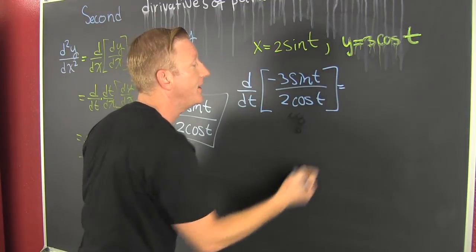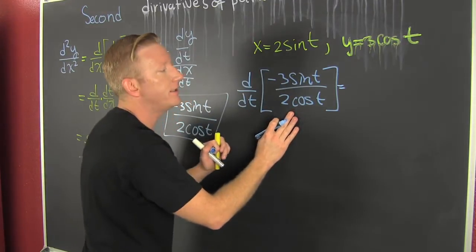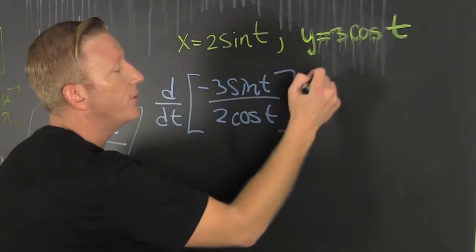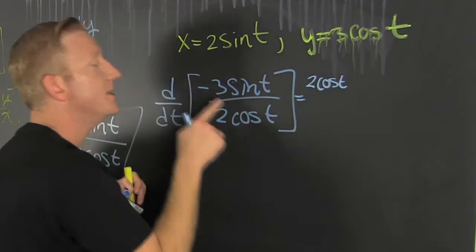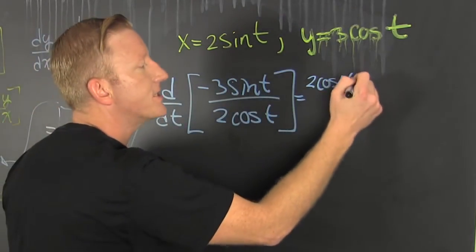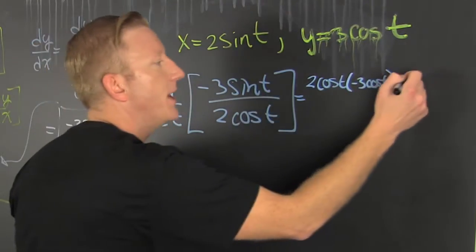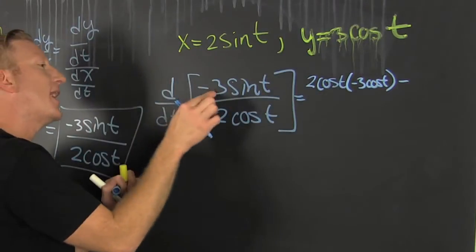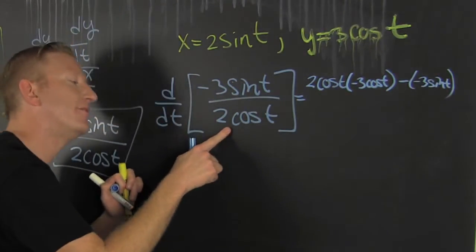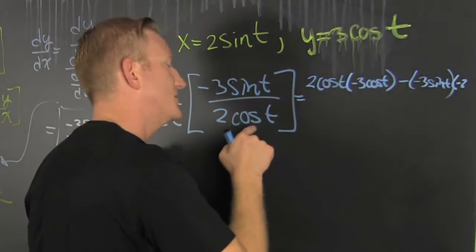We can't take the derivative of that without the quotient rule: low d high minus high d low, all over low low. It's 2 cosine t times d high — the derivative of sine is cosine, so that's minus 3 times the cosine of t — minus high, which is minus 3 sine t, times d low — the derivative of 2 cosine t is minus 2 sine t.